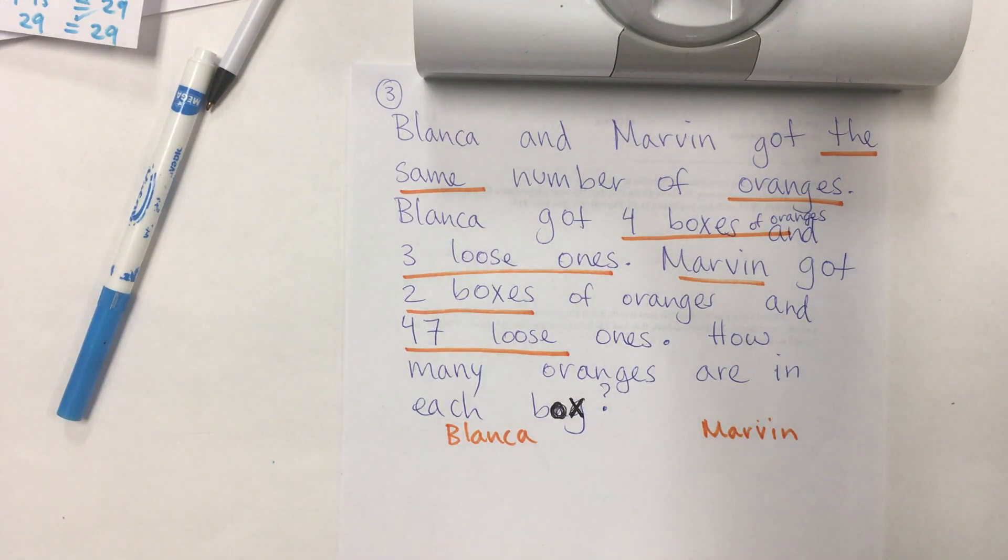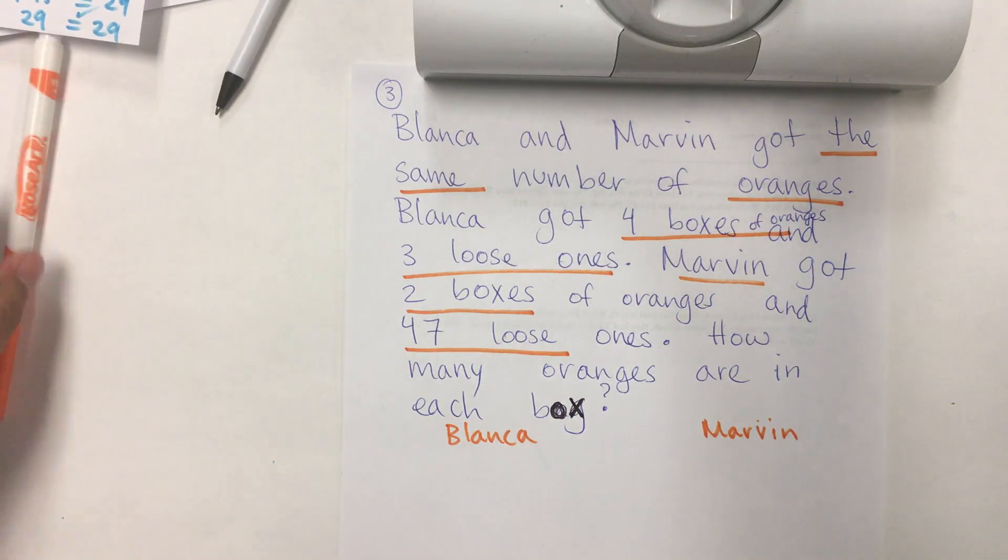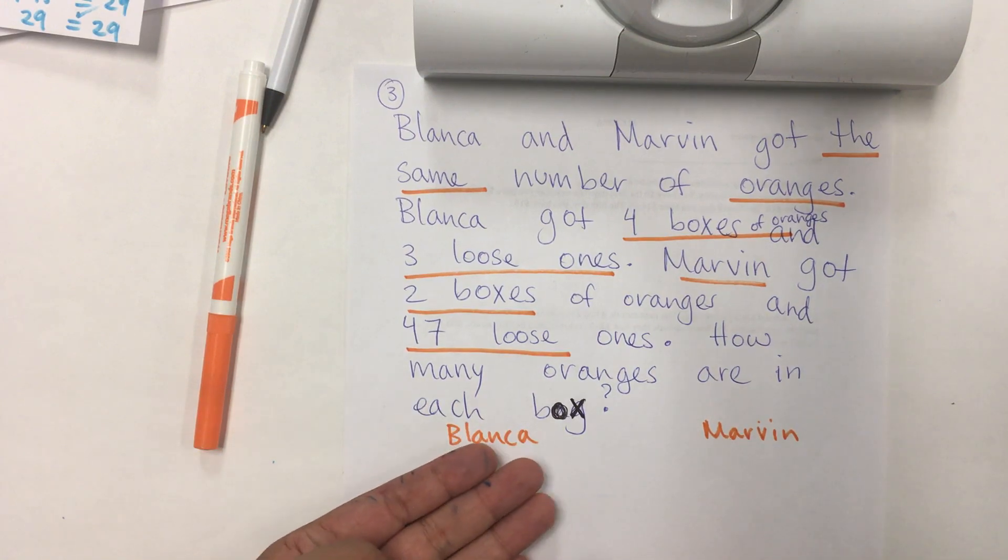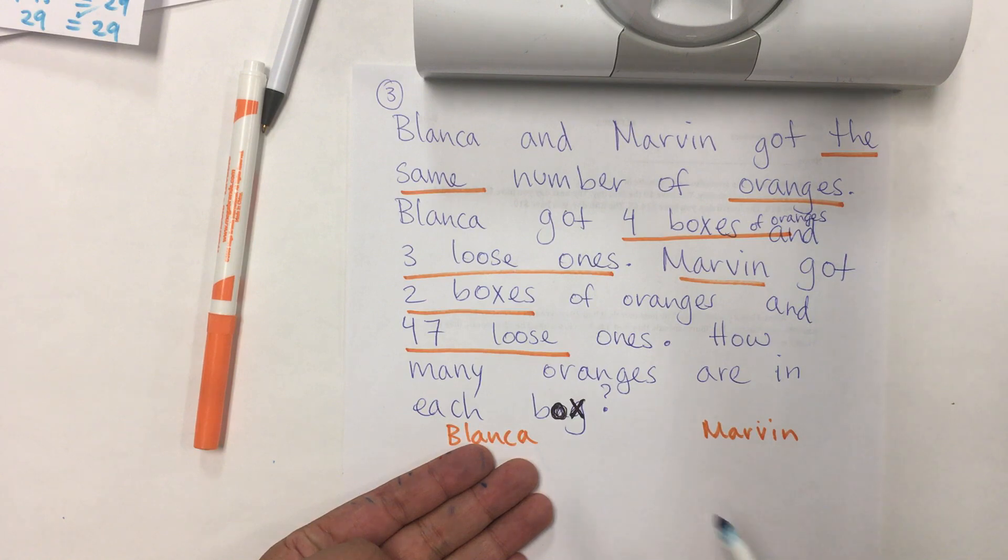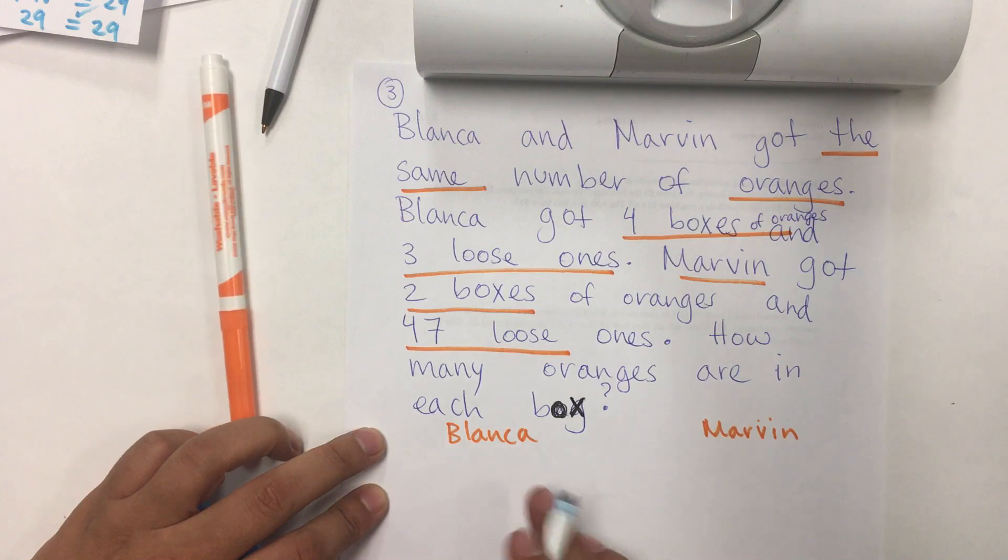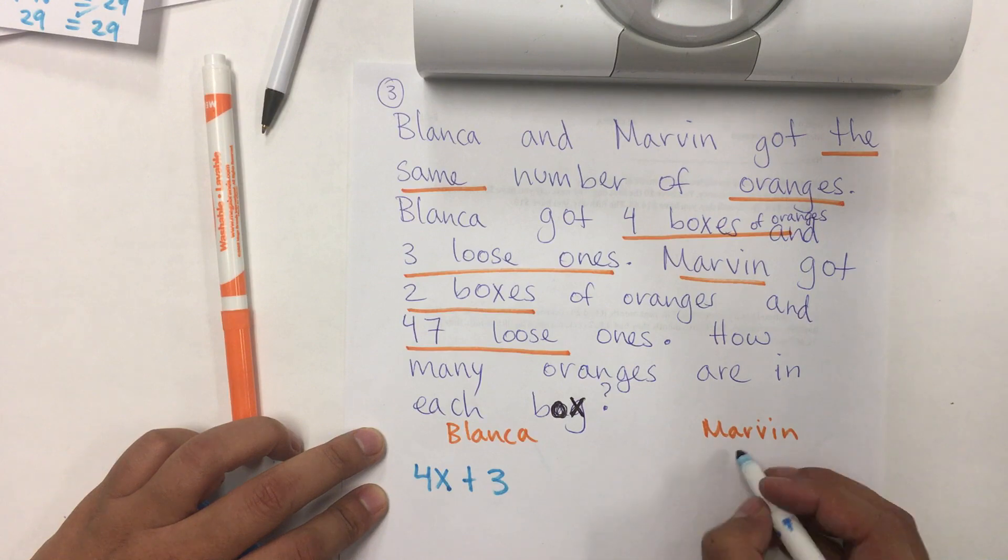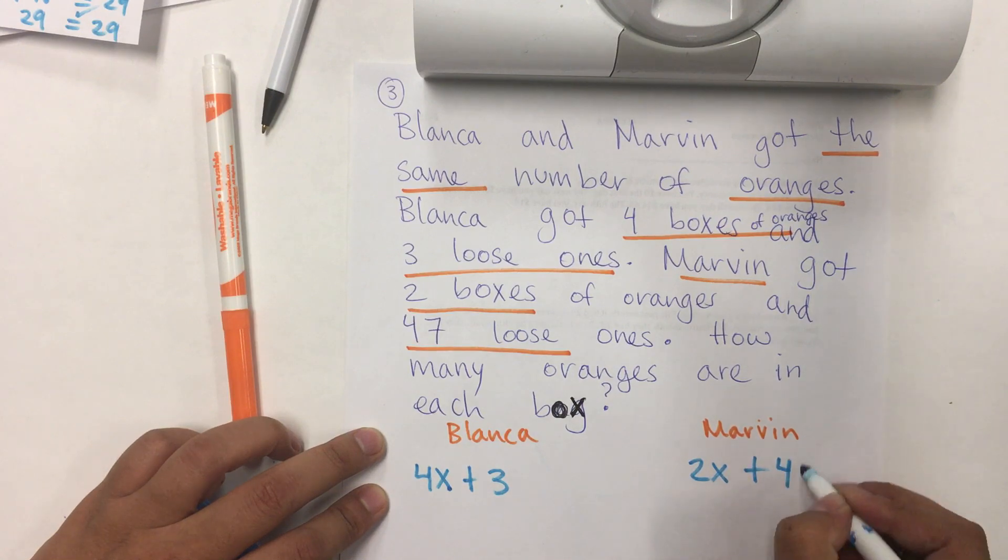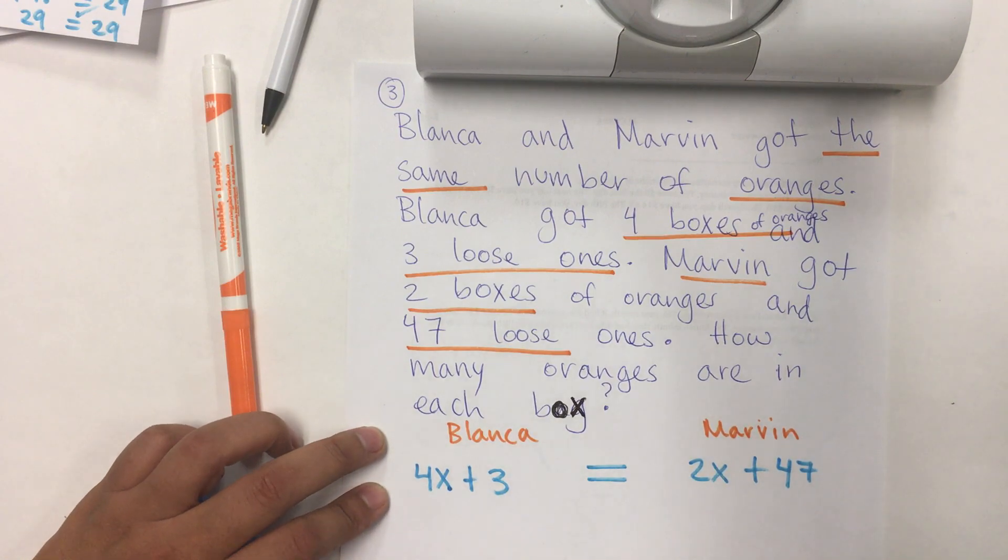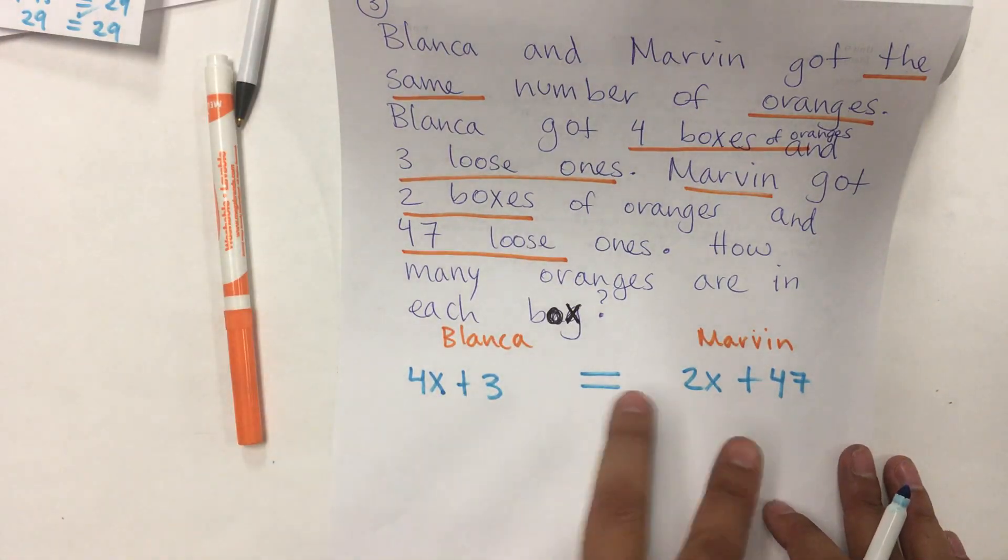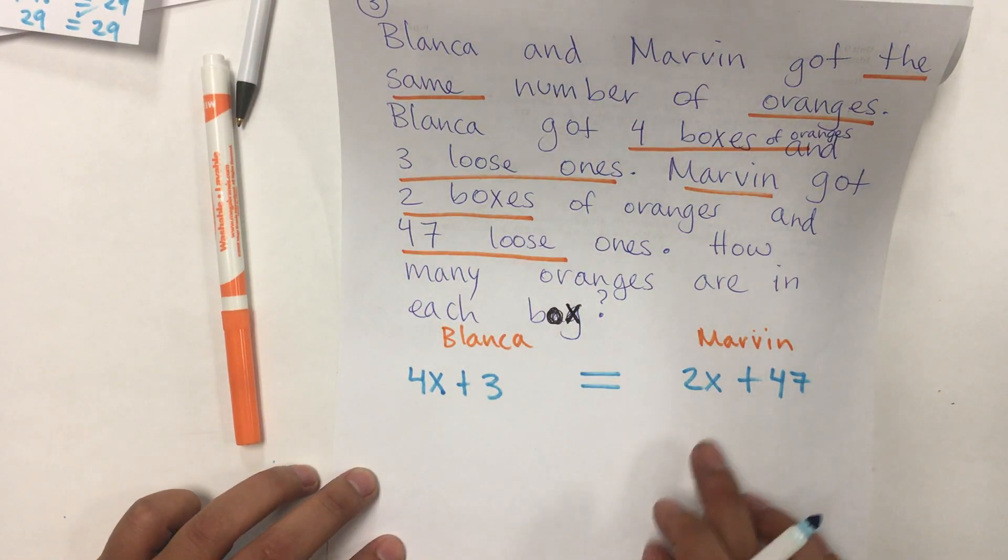So, in here, what we're going to put is that they have the same. That means that Blanca has a certain amount, Marvin has a certain amount, and they have the same meaning equal. So, I'm going to put the amount of Blanca, which is four boxes and three loose ones. Marvin has two boxes and 47 loose ones. And, they have the same meaning equal. That's very important to understand. When we have the same, that means that both have equal.